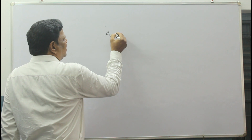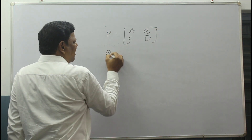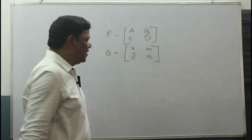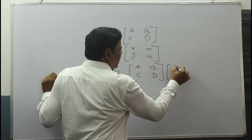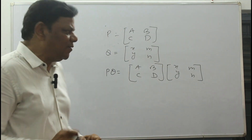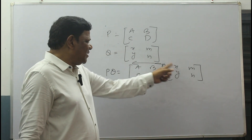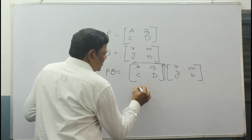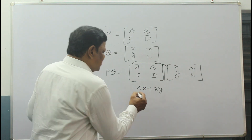In multiplication, the textbook has a different way, but I want to explain a simple method. Let matrix P be given as [A, B, C, D] and another matrix Q be given as [X, Y, M, N]. Now, how to multiply P×Q? Write A, B, C, D on one side and X, Y, M, N on the other. The column [A, B] multiplies with the row [X, Y]. That means: first element is A×X plus B×Y, then C×X plus D×Y.